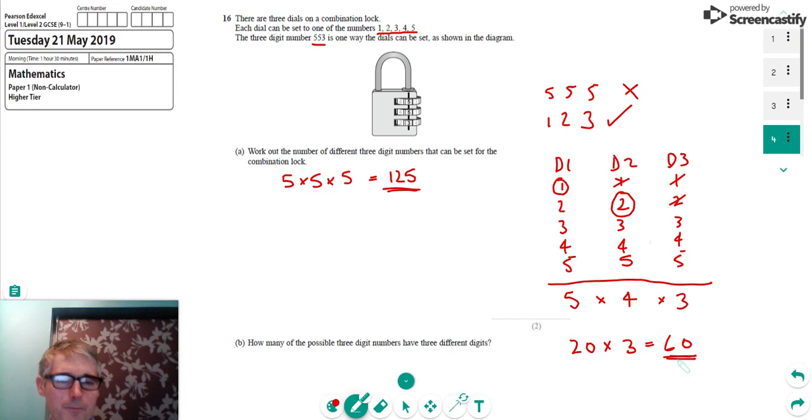And that's it, we've done it. There are 60 possible three-digit numbers from these dials that have three different digits.